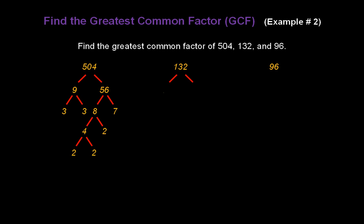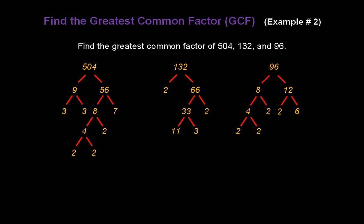Now move over to 132. Let's start making a tree. Factors are 2 and 66. 2 is prime, but 66 breaks down into 33 and 2. And 33 will break down into 11 and 3. Now move over to 96. Factors are 8 and 12. I can break 8 down into 4 times 2. The 4 will break down further into 2 times 2. Break 12 down into 2 times 6, and the 6 will break down further into 3 times 2.